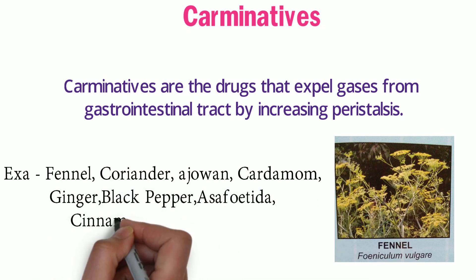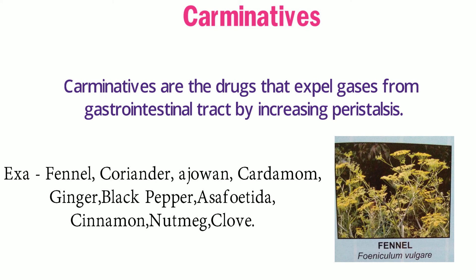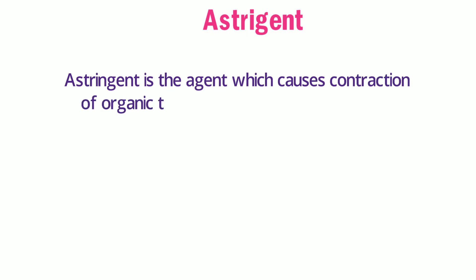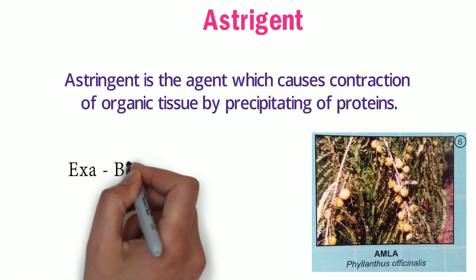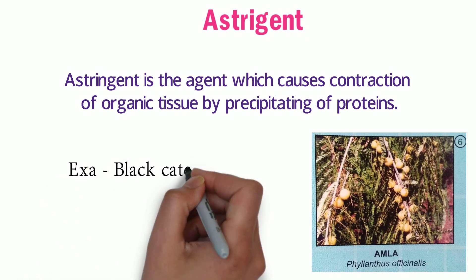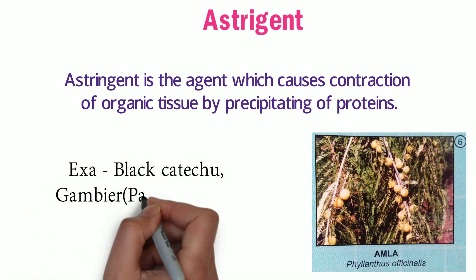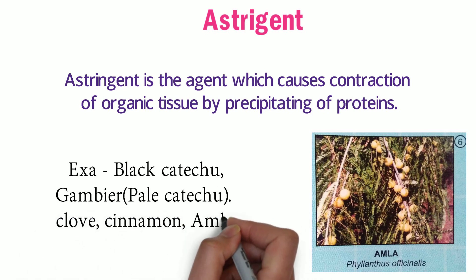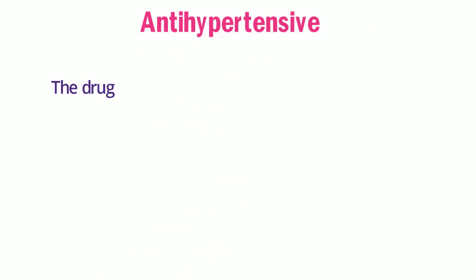An astringent is an agent which causes contraction of organic tissue by precipitating proteins. Examples include black catechu, gambier (pale catechu), clove, cinnamon, and amla.